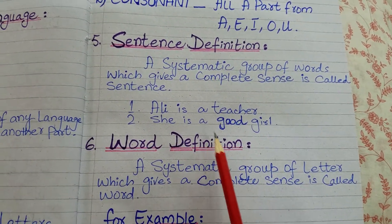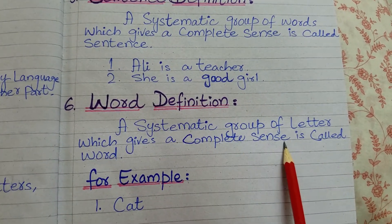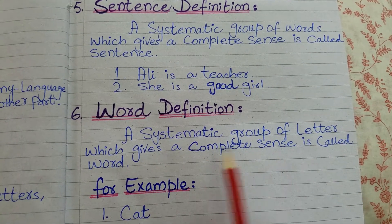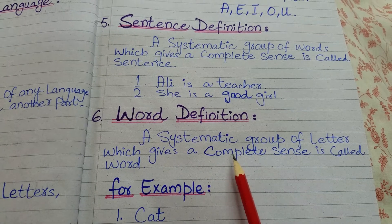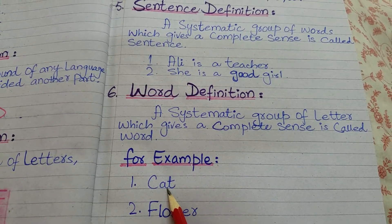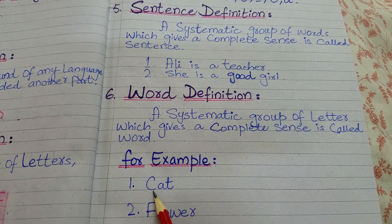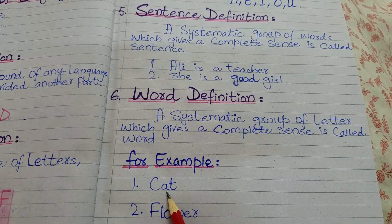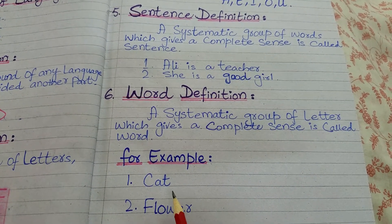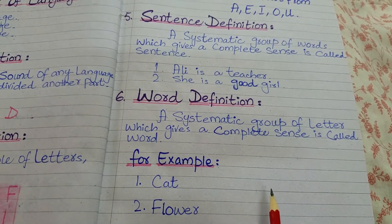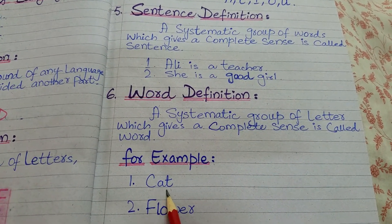Next definition: word definition. A systematic group of letters which gives a complete sense is called a word. Do ya do se zyada huroof milkar ek lafz banate hain jo ba-maane hota hai. For example: 'cat' — C, A, T — three letters milke ek word ban raha hai jo complete sense de raha hai, it's called a word. If you reverse it — T, A, C — that is not a word, it does not give a complete sense. So the actual word is C-A-T: cat, which gives complete sense.